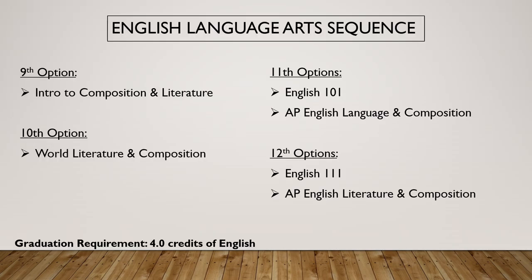For our ELA sequence, 9th and 10th graders have no choices — you're going to do Intro to Comp and Lit and then World Lit and Comp. 11th and 12th grade is when you first get some English opportunities to mix things up if you decide to go with AP, or Advanced Placement. For graduation requirements, every student needs 4.0 credits of English — that is non-negotiable. If you have no idea what AP is, feel free to reach out to your counselor; we talk to freshmen about it during their first class meetings.